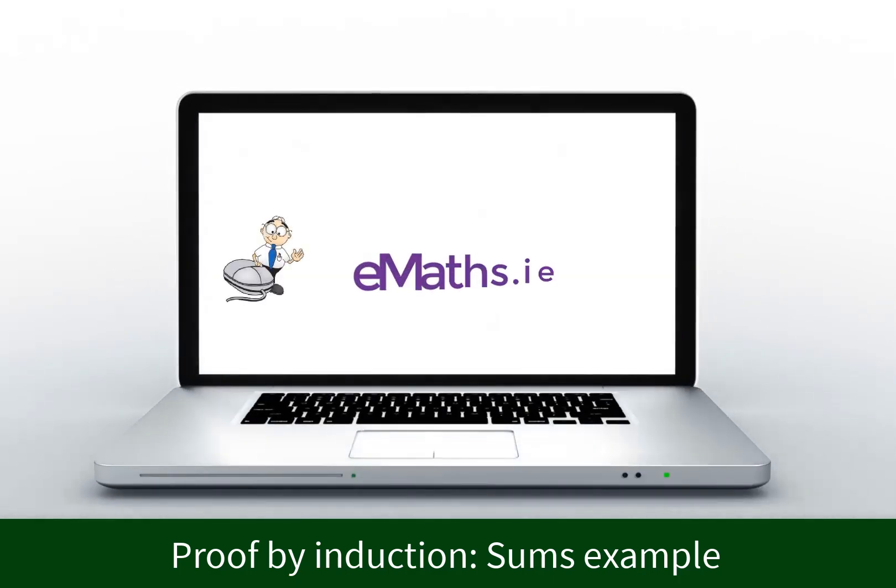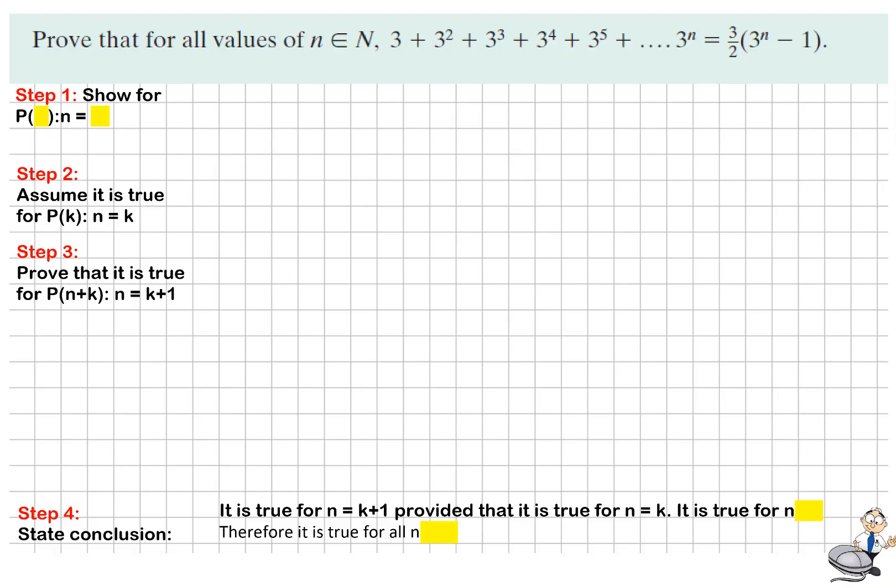Prove by induction for leaving to a higher level, this is a sums example. We're to prove that for all natural numbers, that 3 + 3² + 3³, etc., adding up to 3ⁿ is equal to 3/2 times (3ⁿ - 1).